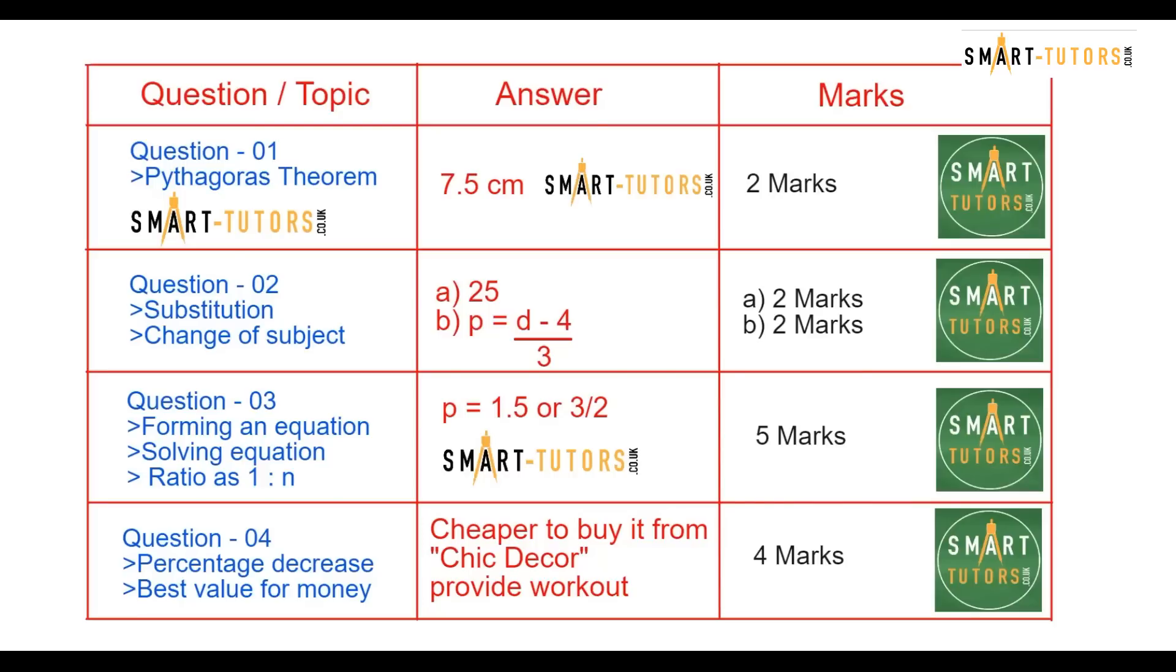Question number 3. Forming an equation, solving an equation, and ratio 1 is to N. In the actual question, it came as 1 is to P. The correct answer is P equals 1.5 or 3/2. It's a 5 marker question.